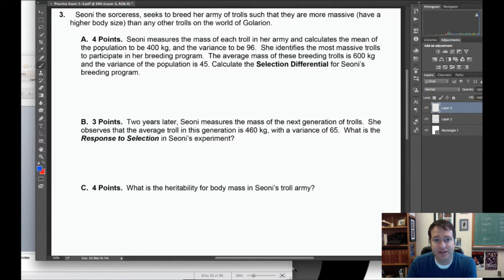This is an application of the breeder's equation, the very tail end of quantitative genetics, kind of bleeding into evolutionary genetics. The basic idea is we're going to do selective breeding to improve a particular trait. In this case we've got a sorceress named Sione who's trying to breed an army of trolls, and she wants to make them more massive, have a higher body size.